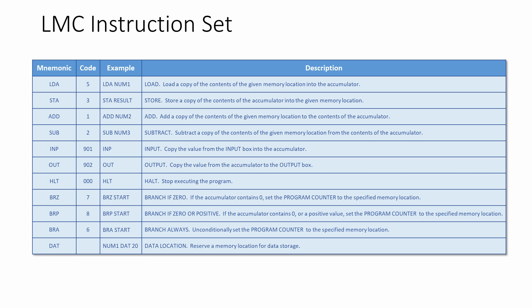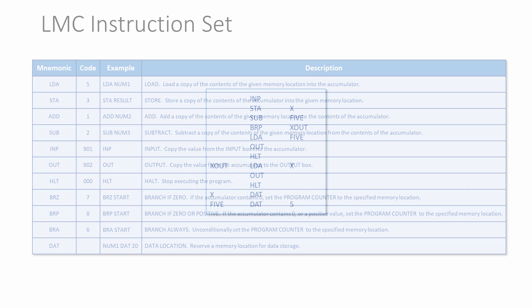To introduce you to the branching operations, I'm going to start by talking you through this program, which decides if a number that is input is greater than or equal to 5. If the input is bigger than 5, it will be output. Otherwise, the number 5 will be output.